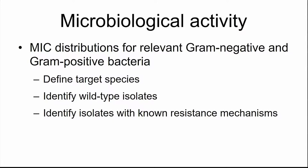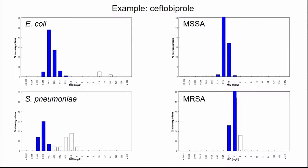Once you have established a reference methodology and QC ranges, you can start MIC testing to produce wild-type MIC distributions. These are used to define target organisms and to identify wild-type isolates versus non-wild-type isolates with known resistance mechanisms. For example, with ceftobiprole data from the EUCAST MIC database, blue bars correspond to wild-type isolates and white bars to non-wild-type. For Staphylococcus, we must also look at important resistance mechanisms, since MIC distributions differ for MSSA compared to MRSA.